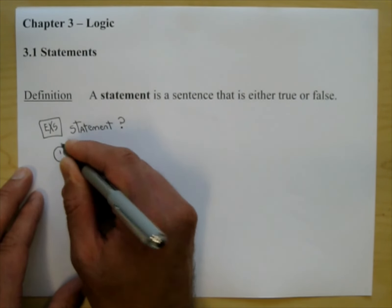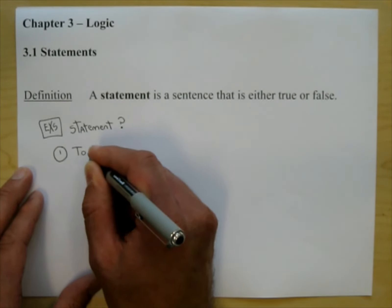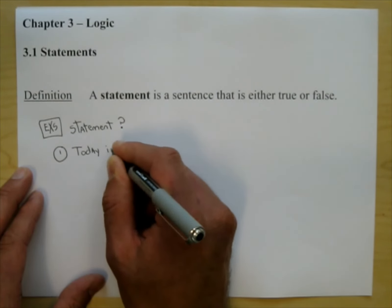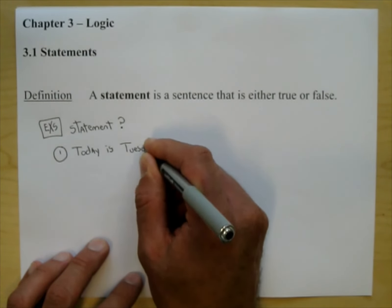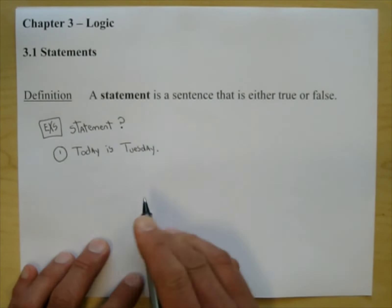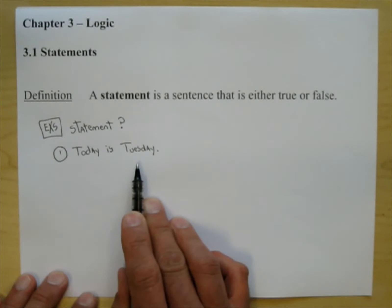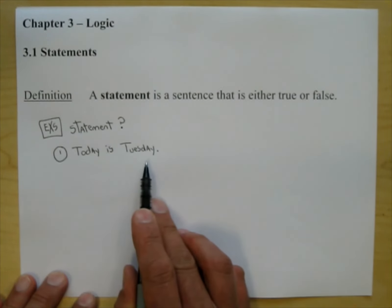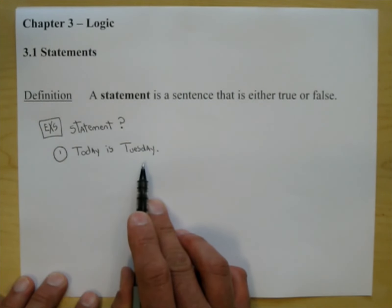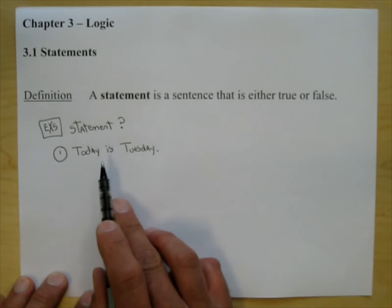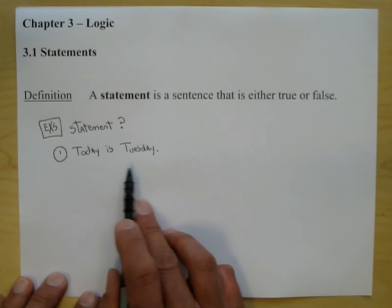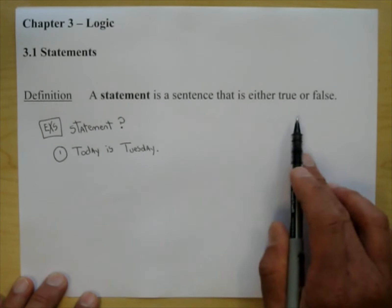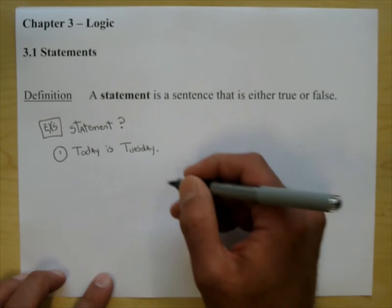A statement is a sentence that is either true or false. Let's put a sentence down: 'Today is Tuesday.' This is either true or false. I don't know what day you're watching this video — for some of you it will be true, for some it will be false. But it can't be true and false at the same time. So this does fit the description — it is a statement. The answer is yes.